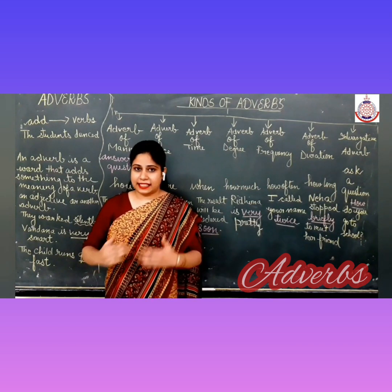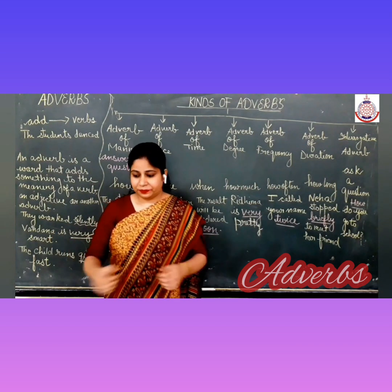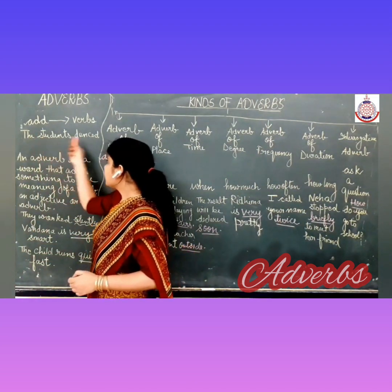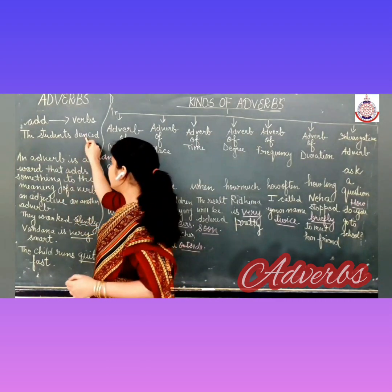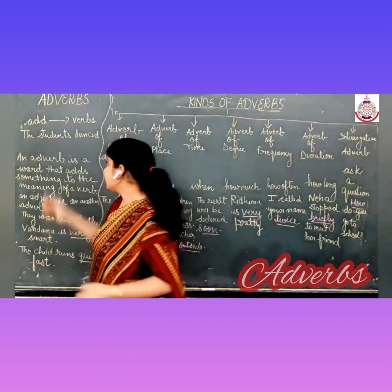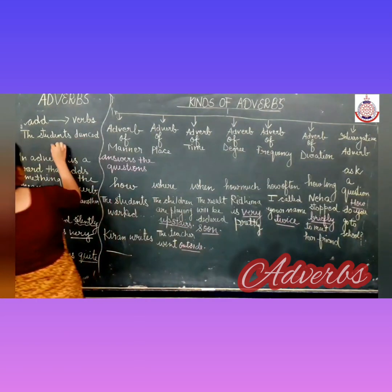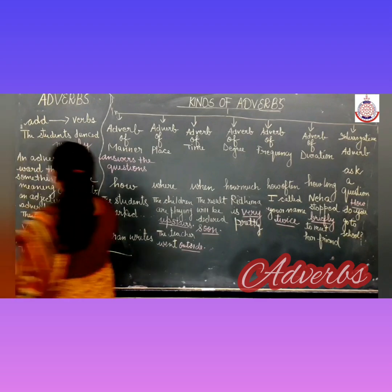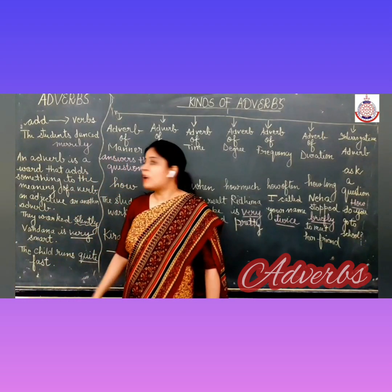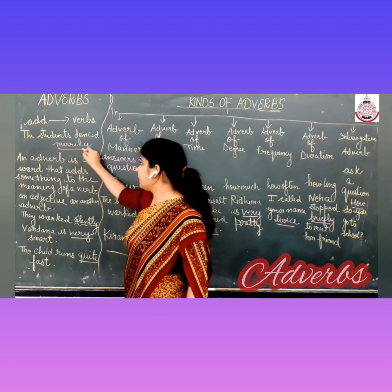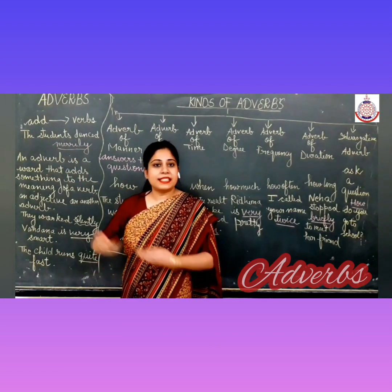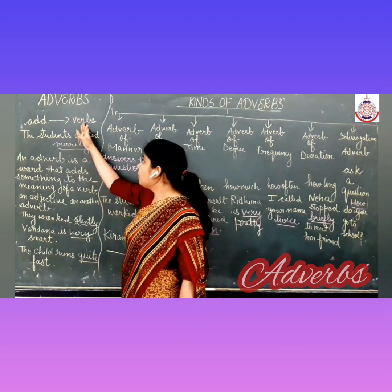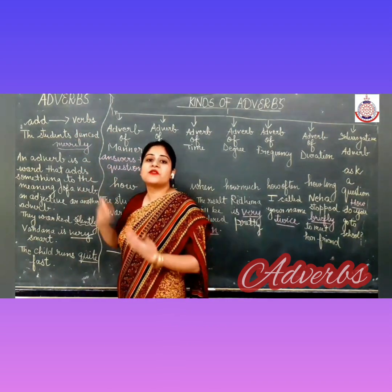The children of class 7 danced. The students danced — danced is a verb. Now let me add an adverb to it. The students danced merrily. So here the adverb is merrily. How did the students dance? Merrily. So adverb adds to the meaning of a verb — it modifies the verb.